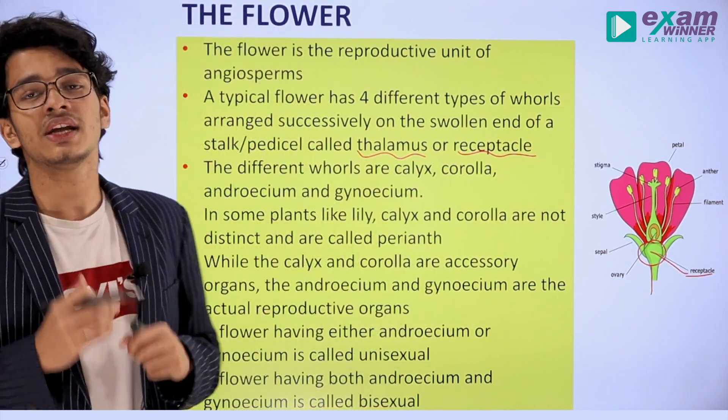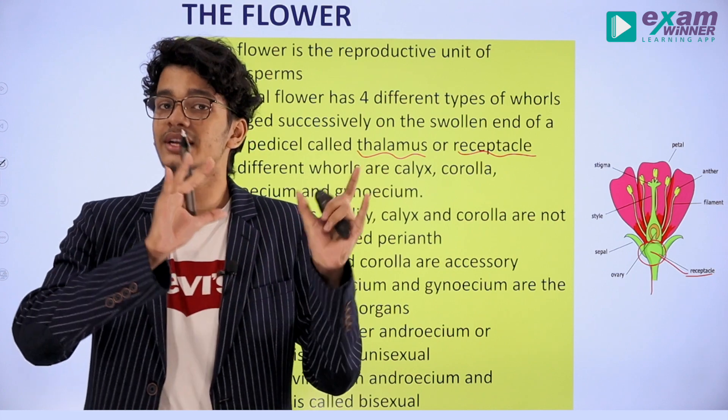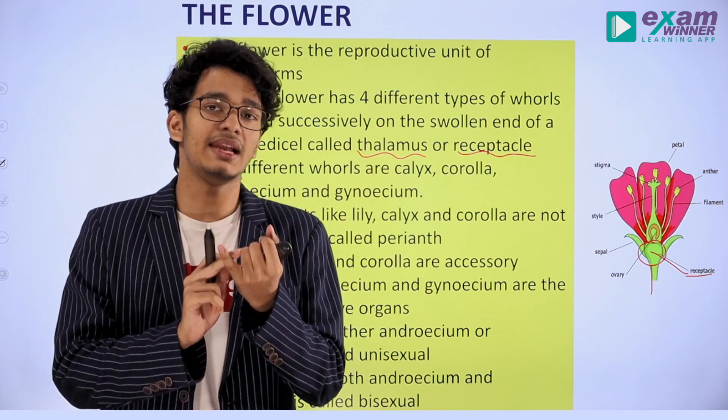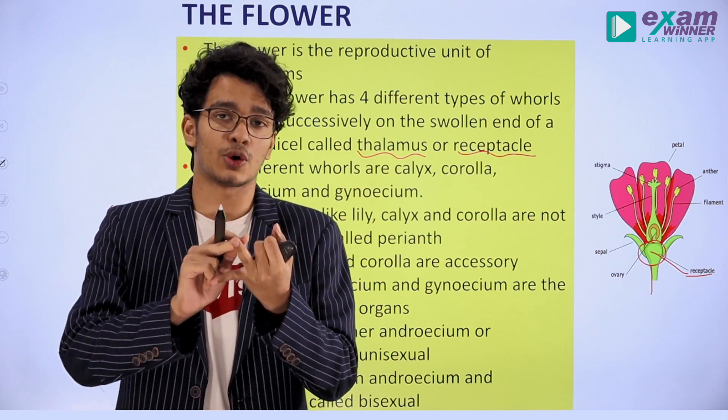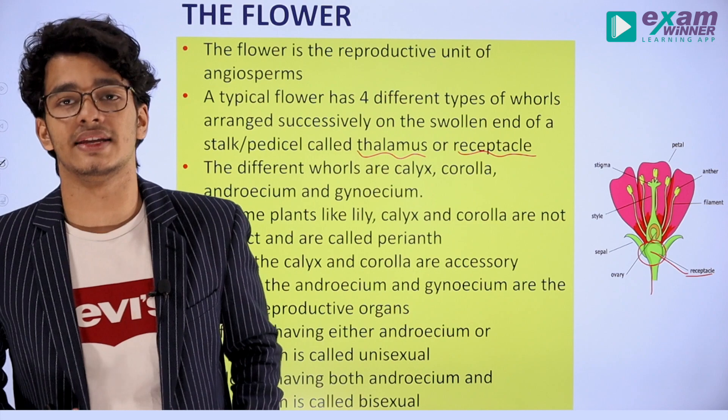What are the floral whorls? What are the technical terms? The four floral whorls are: Calyx, Corolla, Androecium, and Gynoecium.